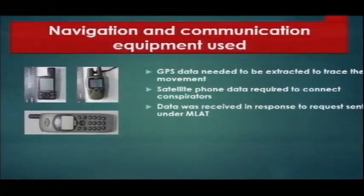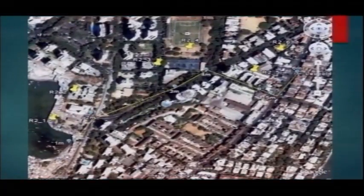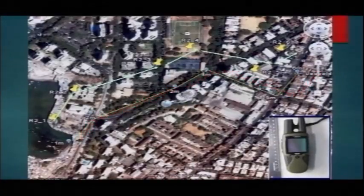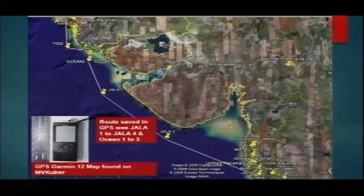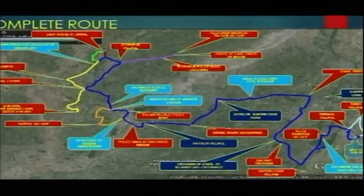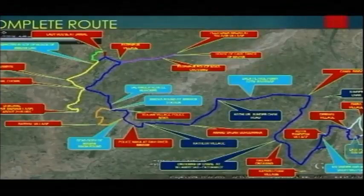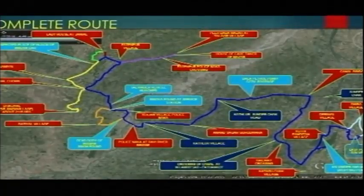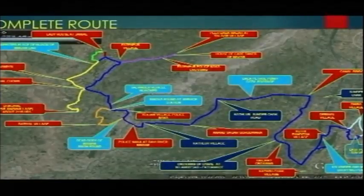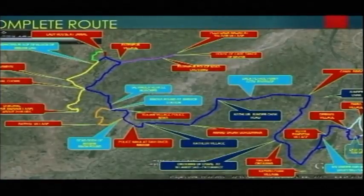Regarding the Mumbai terror attack and the David Coleman Headley case — all coordinates were fed in. For Pathankot, this is the route followed by the attackers from the border to the Pathankot airbase. They never asked anyone for directions — everything was fed in. They were shown Google Maps on a very big screen during training, and every landmark was identified so they knew exactly where it was. This is the use of technology for planning, preparation, and execution — reaching the actual attack site without needing anything else.